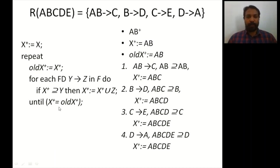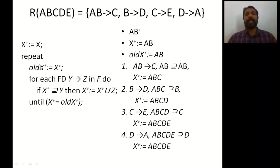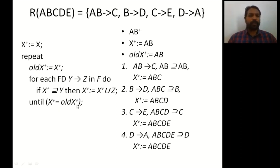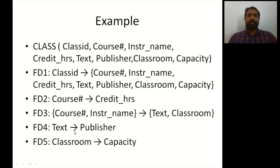The algorithm stops when X+ equals old_X+. After all functional dependencies have been processed, X+ is assigned to old_X+, and the loop repeats. Since all attributes have already been added and nothing changes, the condition X+ = old_X+ is satisfied and we exit.